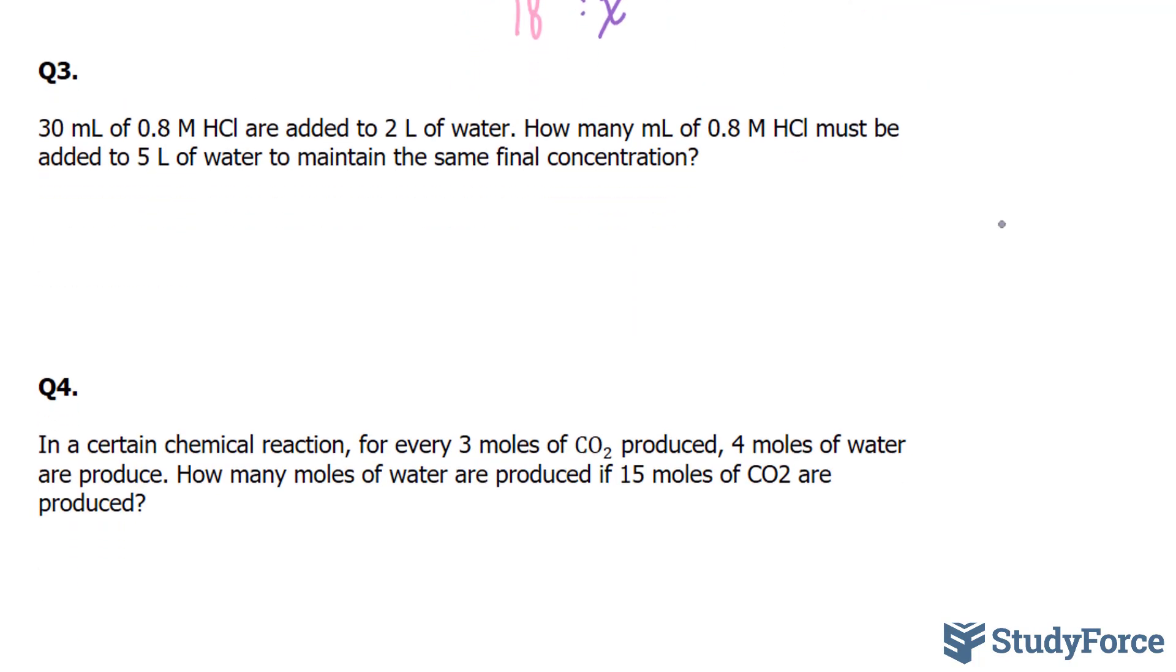The next question asks, 30 milliliters of 0.8 molar HCl are added to 2 liters of water. How many milliliters of 0.8 molar HCl must be added to 5 liters of water to maintain the same final concentration? So what remains the same is this. And we know that 30 milliliters is added to 2 liters of water, and they want to know how many milliliters of HCl need to be added to 5 liters of water.